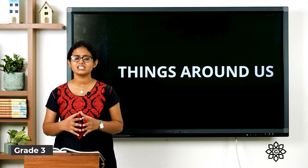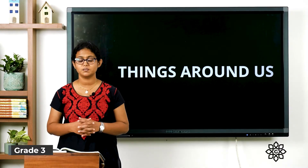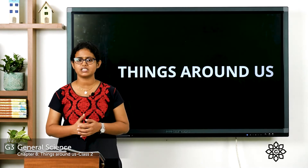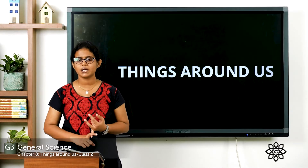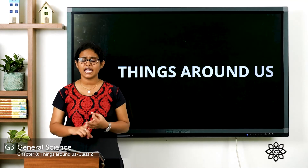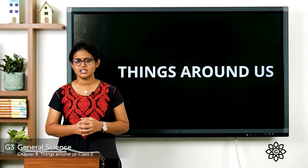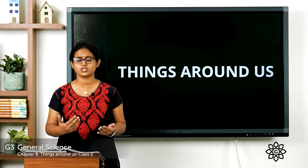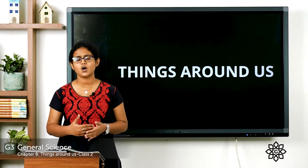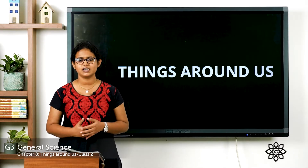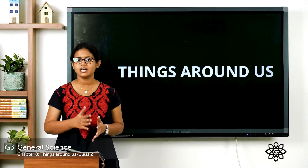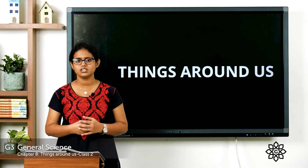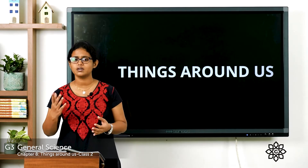Good morning. In the last class we discussed about different types of materials — hard materials, soft materials, heavy and light materials, natural materials. Natural materials are materials that we obtain from nature, found in nature. We get natural materials from plants and animals, as well as from earth. Today let's learn about natural materials and man-made things.